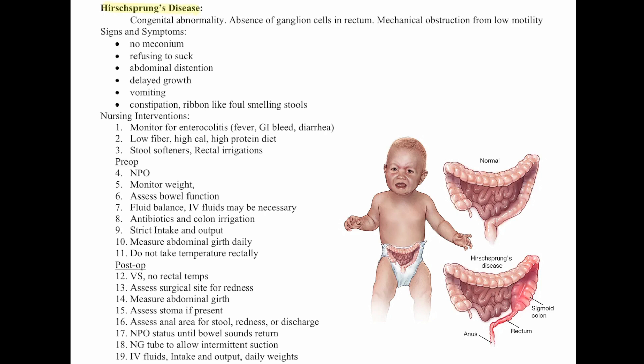Hirschsprung's disease is a congenital abnormality with the absence of ganglion cells in the rectum, causing mechanical obstruction from low motility. Signs and symptoms include no meconium at birth, refusing to suck, abdominal distention, delayed growth, vomiting, constipation, and ribbon-like foul-smelling stools — which is a key sign.